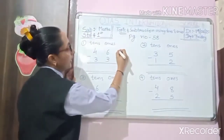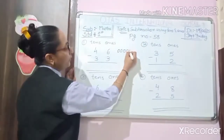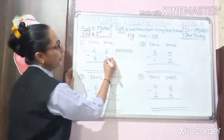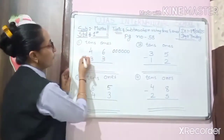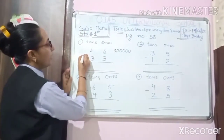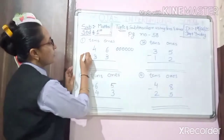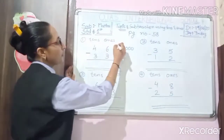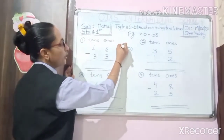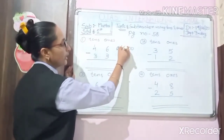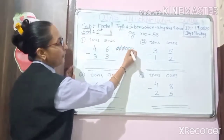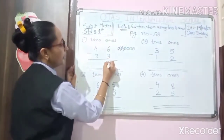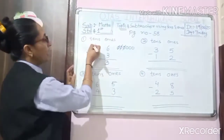So 1, 2, 3, 4, 5, 6. And here 3. So we have to minus — we have to cut the 3 circles: 1, 2, 3. So how many remaining? 1, 2, 3. So we have to write here 3.